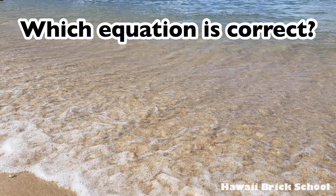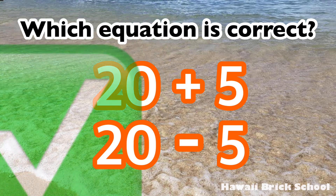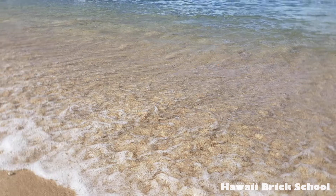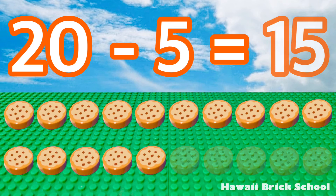Which equation is correct: 20 plus 5, or 20 minus 5? The correct equation is 20 minus 5. 20 minus 5 is 15.